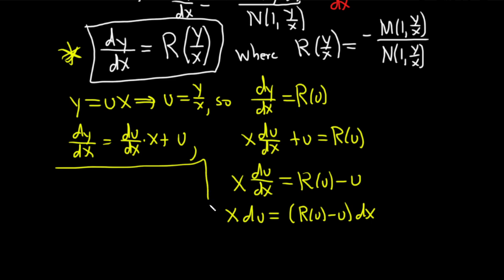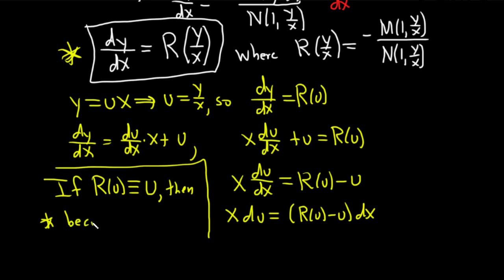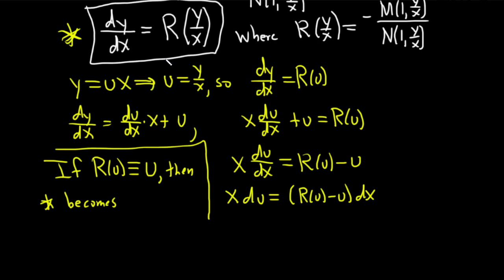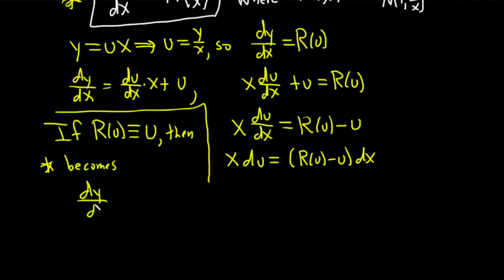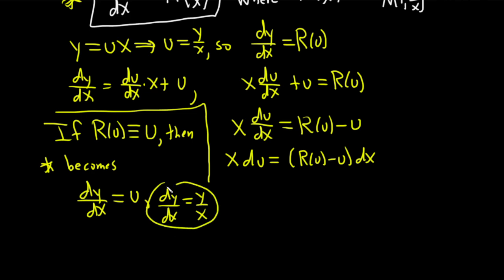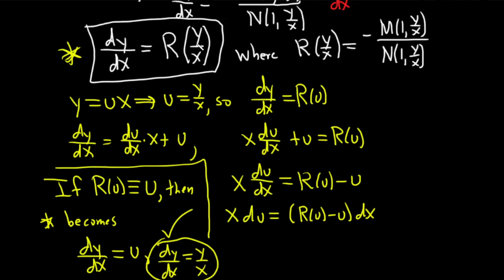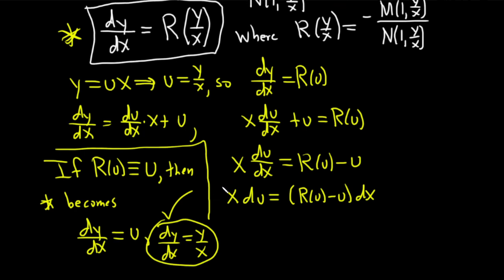I want to divide by R(u) − u, but I'm concerned about dividing by zero. If R(u) is identically equal to u, then equation star becomes dy/dx = R(u) = u = y/x. That's dy/dx = y/x, which is trivially separable — very easy to solve. So if R(u) = u, we're done: go back to star, replace R(y/x) with u, and since u = y/x, we have dy/dx = y/x. Piece of cake, it's separable.